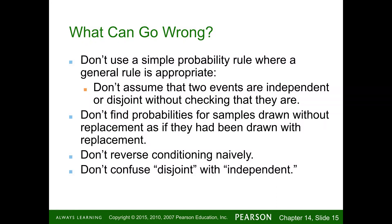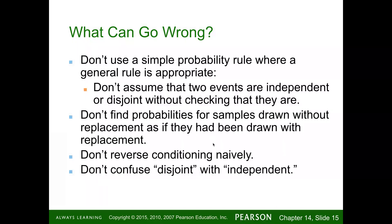So what can go wrong? Don't use a simple probability rule where the general rule is appropriate. Don't assume that two events are independent or disjoint without checking. Consider the pants and shirts scenario: I have three pairs of pants and two shirts — does the type of pants chosen influence the shirt chosen? If it's totally random, no. It depends on how the question is framed. If it says a matching outfit with specific colors, you could argue differently. We always have to assume randomness when stated, but the framing changes which formulas we use.